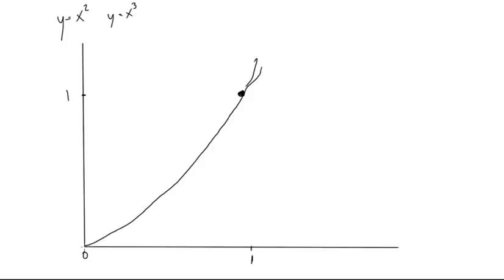And then x cubed kind of goes out this way, and then it cuts up faster at a steeper angle. It'll go up like that, and x squared will kind of go off like that.